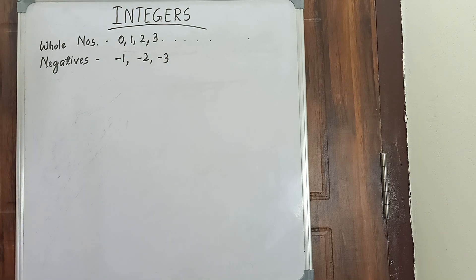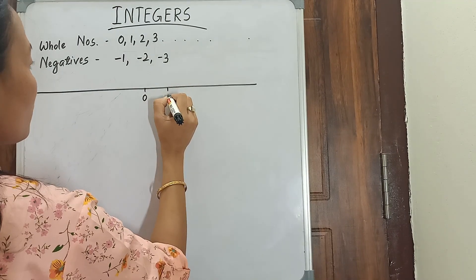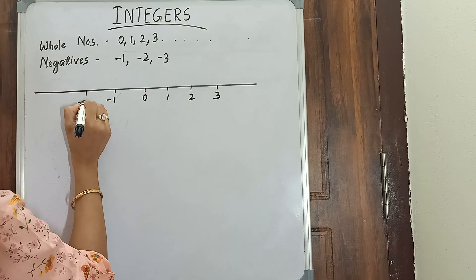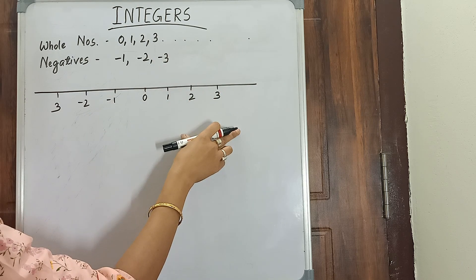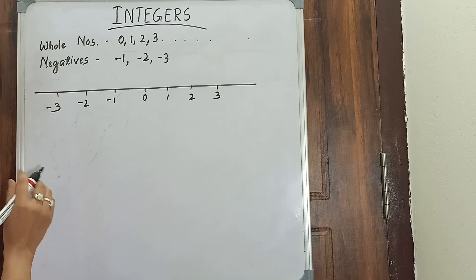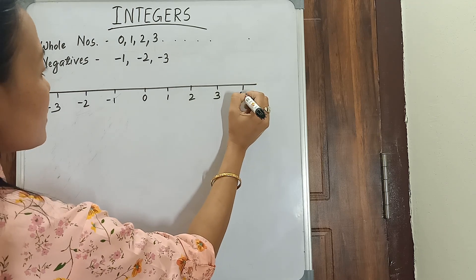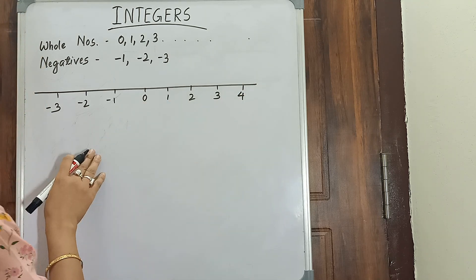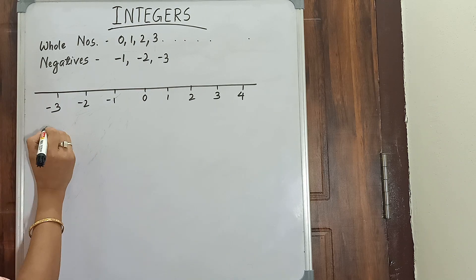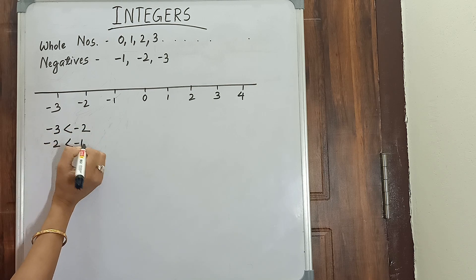Together, whole numbers and negatives are called integers. For better understanding, I'll show you on a number line: 0, 1, 2, 3 on the right and minus 1, minus 2, minus 3 on the left. Numbers on the right are called positive integers and numbers on the left are called negative integers. For positive integers, the bigger number is always greater — like 4 is greater than 3. But for negative integers, the smaller number is always bigger — like minus 3 is smaller than minus 2, minus 2 is smaller than minus 1, and so on.